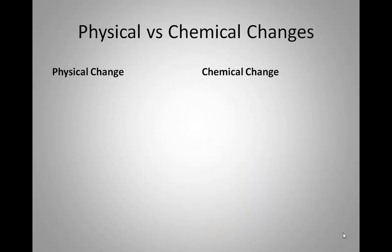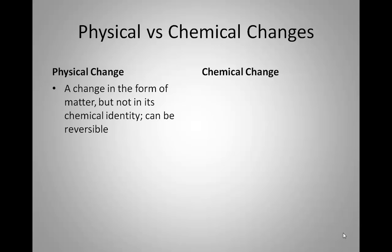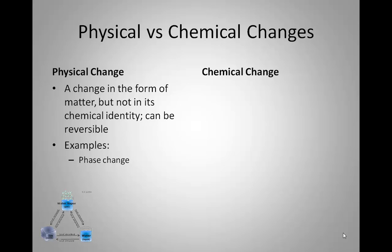Now, physical versus chemical changes. A physical change is a change in the form of matter, but not its chemical identity. A physical change does not change a chemical identity, and most of these can be reversible. For example, a phase change: if you start with an ice cube, it's made of H2O. You melt it — it turns into liquid H2O. You heat that liquid water — it turns to water vapor, which is a gas. But it is still H2O, and can be condensed back down into liquid.